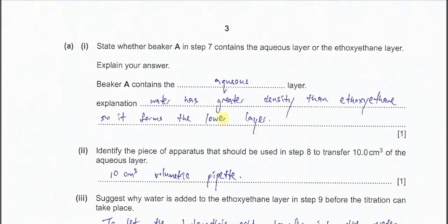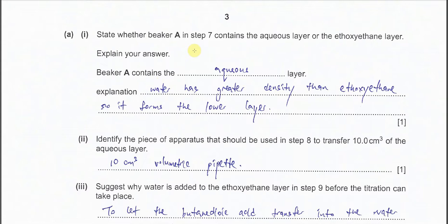For part A1, we determine whether beaker A in step 7 contains the aqueous layer or the ethoxyethane. As mentioned, the lower layer is always the aqueous layer, so beaker A must contain the aqueous layer. The reason is density — water has a greater density than ethoxyethane, so it settles as the lower layer.